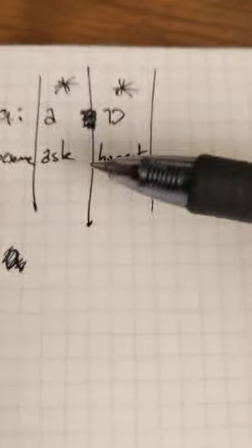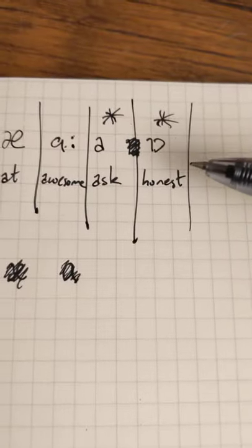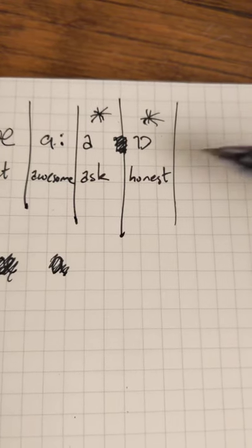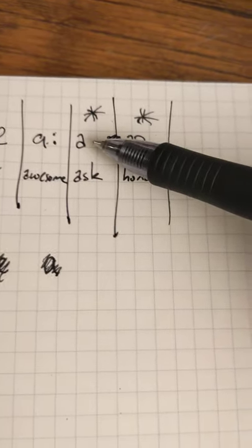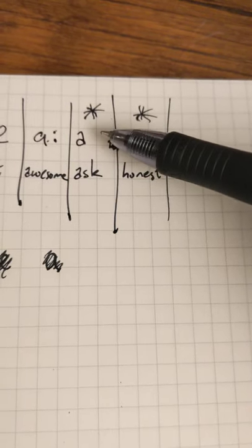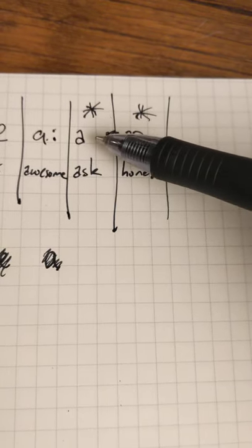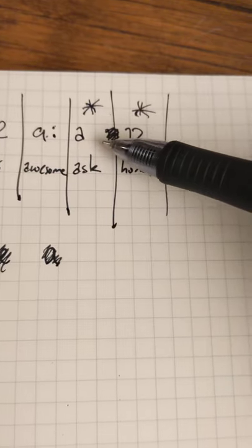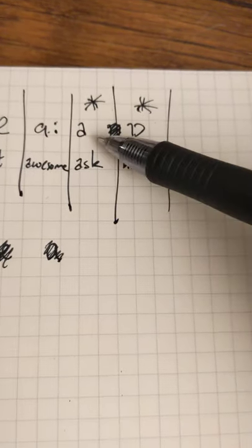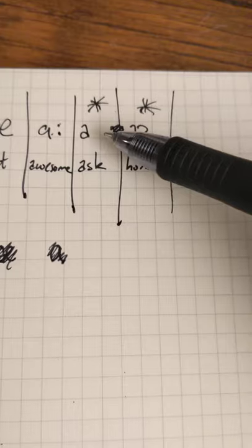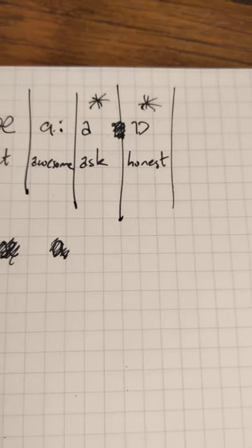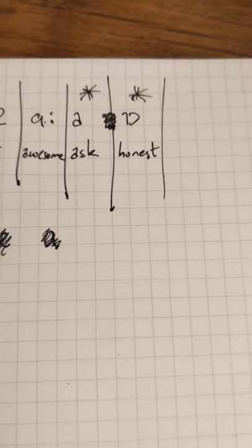These two bonus sounds show up in other dialects but not really in American English very much. You get the 'ask' sound — I never really got that down, but if you look up this symbol there are some great tutorials. It happens a lot in Mid-Atlantic dialect, speaking like Audrey Hepburn.